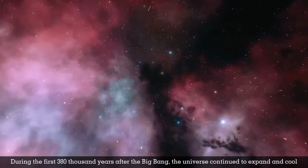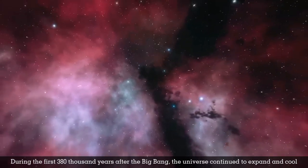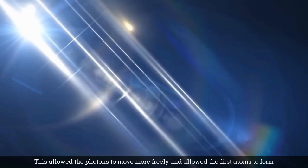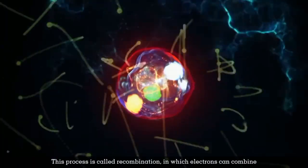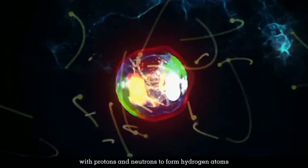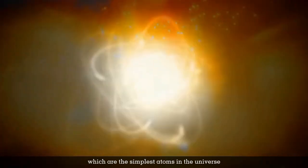During the first 380,000 years after the Big Bang, the universe continued to expand and cool. This allowed the photons to move more freely and allowed the first atoms to form. This process is called recombination, in which electrons can combine with protons and neutrons to form hydrogen atoms, which are the simplest atoms in the universe.